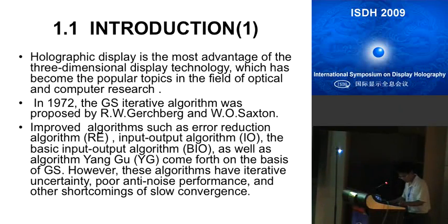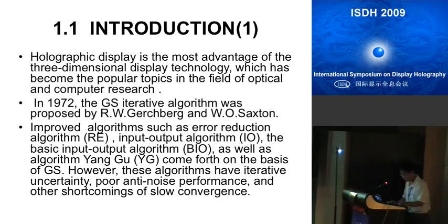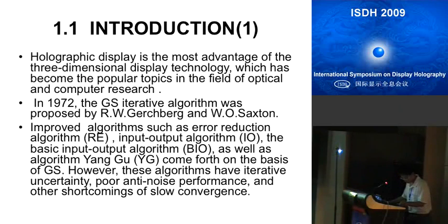It has become one of the major research methods to use iterative numerical algorithms for phase retrieval based on the intensity of light. In 1972, the GS iterative algorithm was proposed by Gerchberg and Saxton, and improved algorithms such as ER, IO, BIO, and YG were developed on the basis of GS. However, these algorithms have iterative uncertainty, poor anti-noise performance, and other shortcomings such as slow convergence.